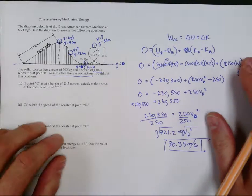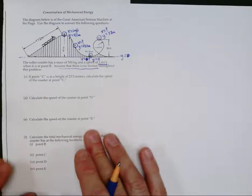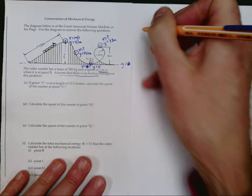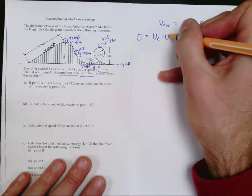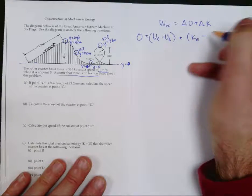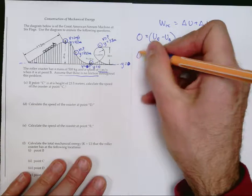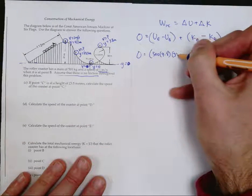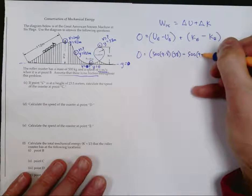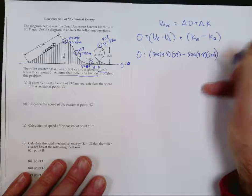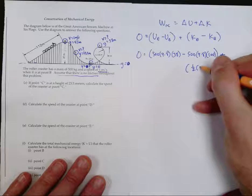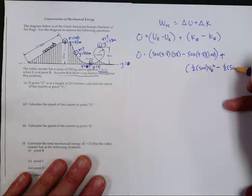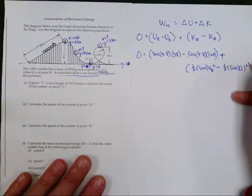For point E, same equation: WNC equals zero, comparing E to B. The potential at E is 500 × 9.8 × 38, minus 500 × 9.8 × 47, plus one-half × 500 × vE² minus one-half × 500 × 1². The answer works out to approximately 13 meters per second.